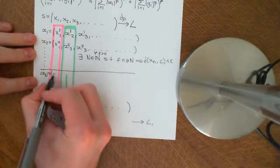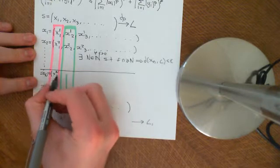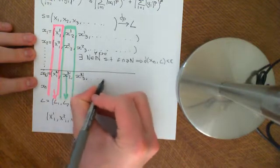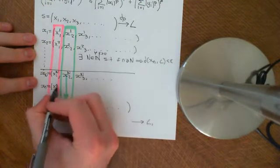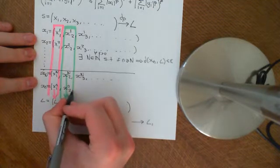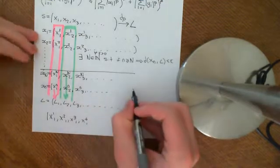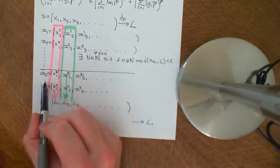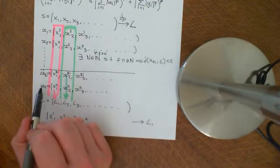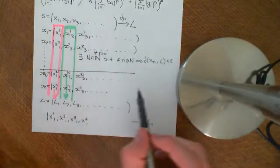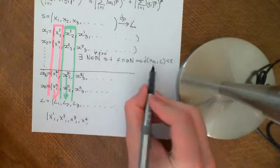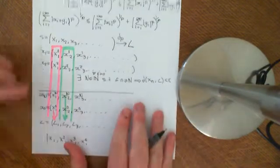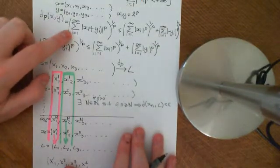Let's just write out what these sequences are — just a few terms. So you've got a sequence x big N, which is x_N1, x_N2, x_N3, etc. — a few terms of that Nth sequence. And x little n is again another sequence: x_n1, x_n2, x_n3, etc. So whatever epsilon you give me, I should be able to find you some big N, such that if you go to that point in the sequence and take any other point beyond that point, and ask what is the distance of that point from the limit sequence L, it should be less than epsilon.